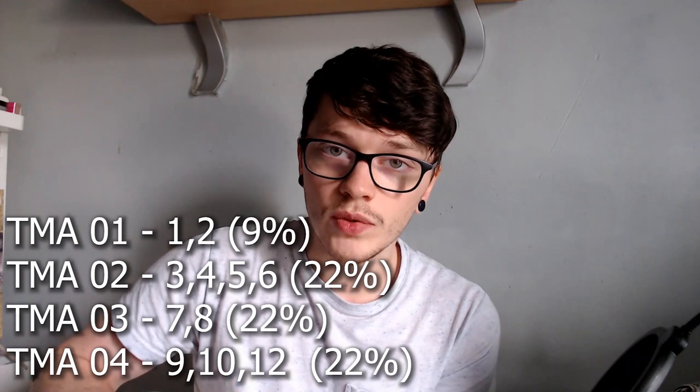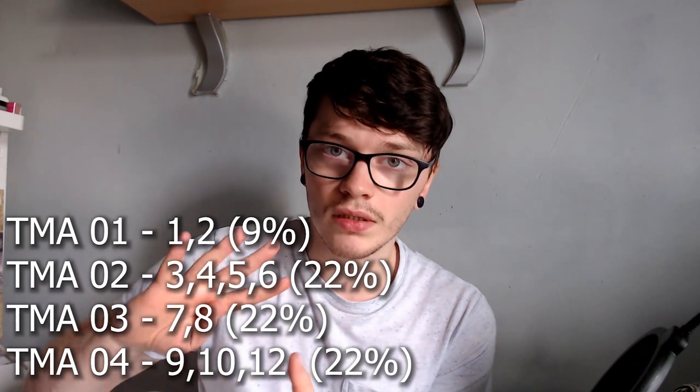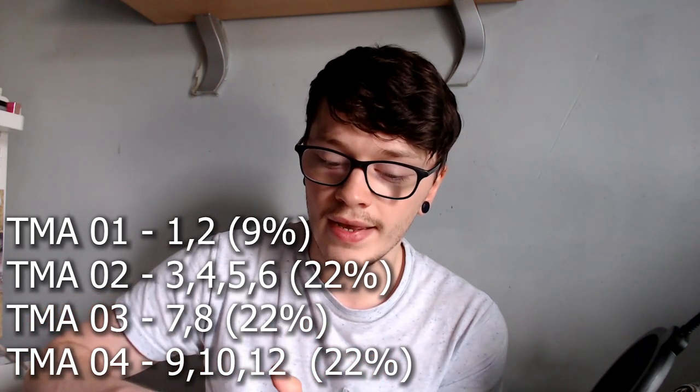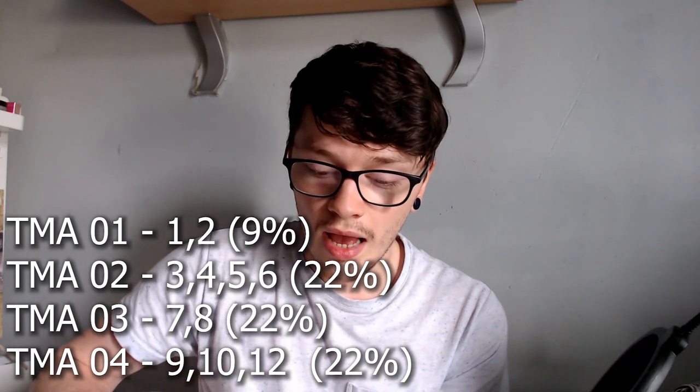Overall there are 12 individual units covered throughout the entire year. For TMA1 it's just units one and two. TMA2 covers units three, four, five, and six — the biggest amount of units in a single TMA. TMA3 is units seven and eight, and TMA4 is units nine, ten, and twelve. Unit 11 is included in the books but is completely optional — it won't be on a TMA, an ICMA, or your end-of-year exam. It's there if you want to study it but you're not missing out if you don't.